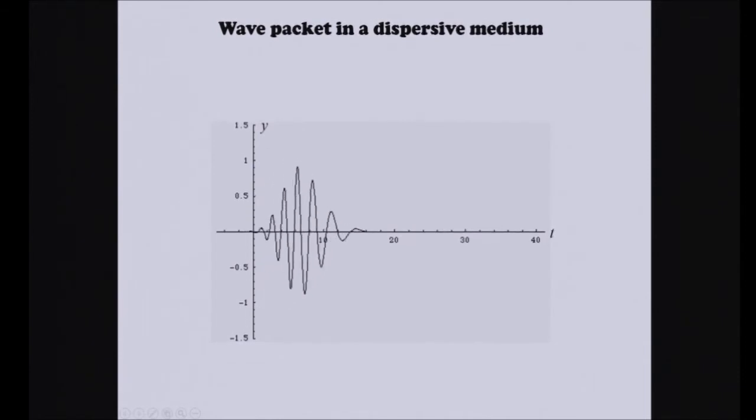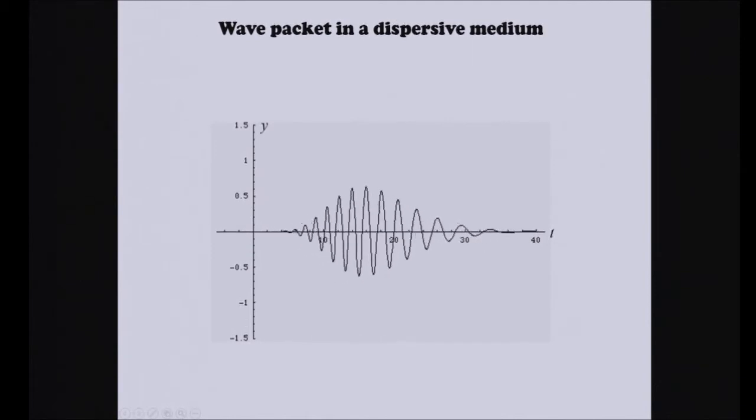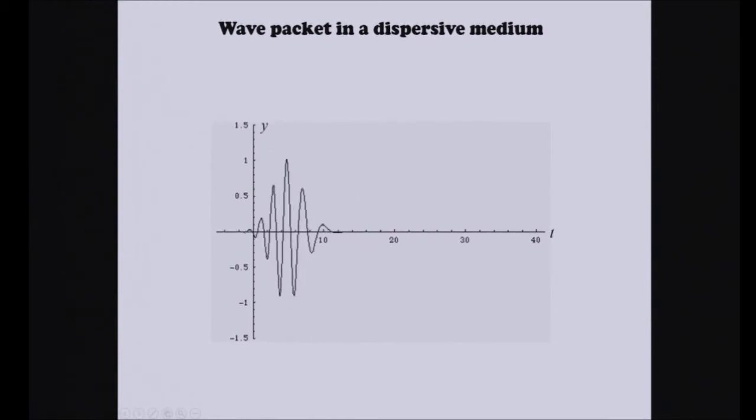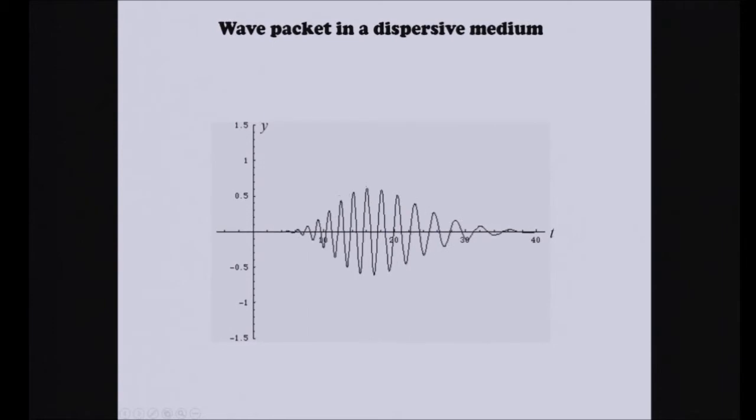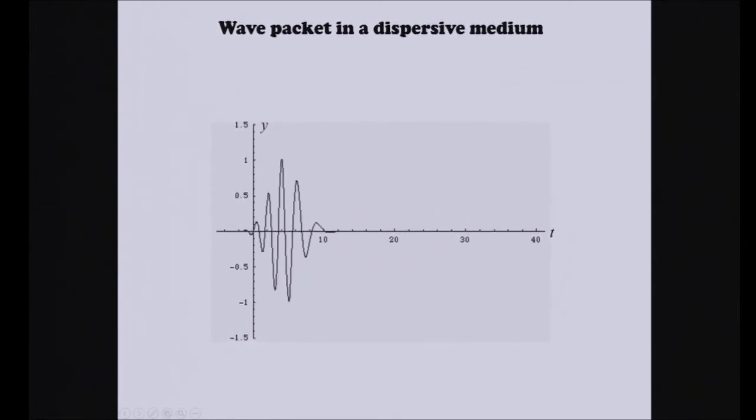So what do you guys see going on right now? It's rippling. What else is it doing? It's expanding. For this particular medium, whatever it is, it looks like the longer wavelengths are traveling faster than the shorter wavelengths. And so not only is it rippling, the actual shape of the wave packet is spreading out. So many media are dispersive.